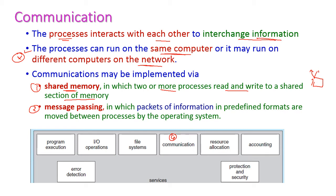The second communication method is message passing, where a packet of information in a predefined format is moved between processes by the operating system. So all shared memory communication or message passing communication takes place only through the operating system.